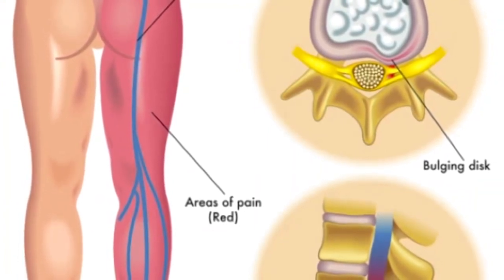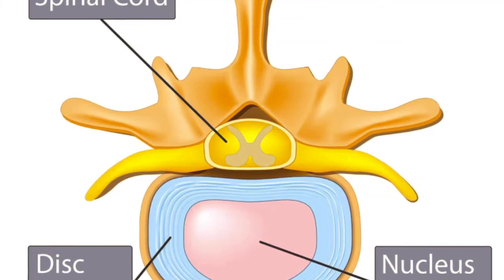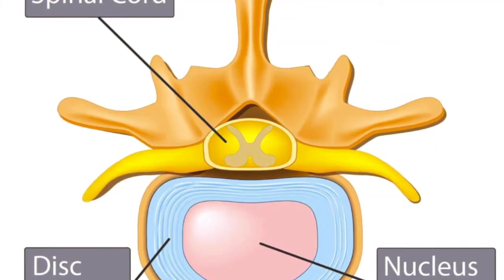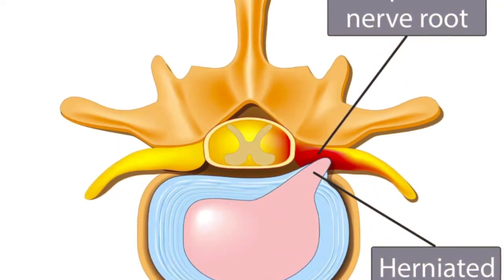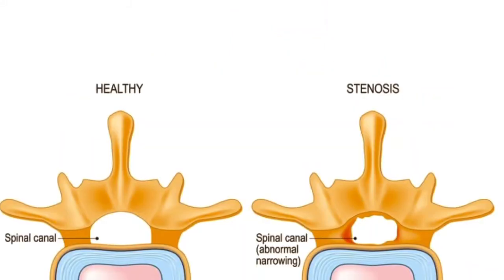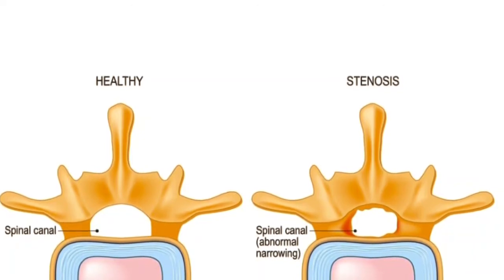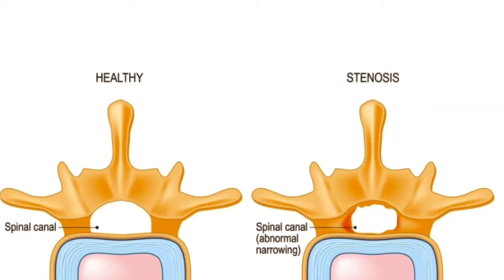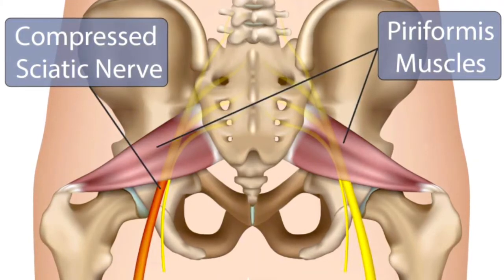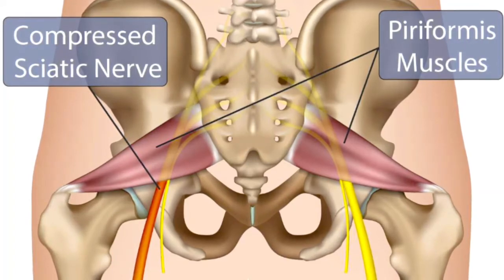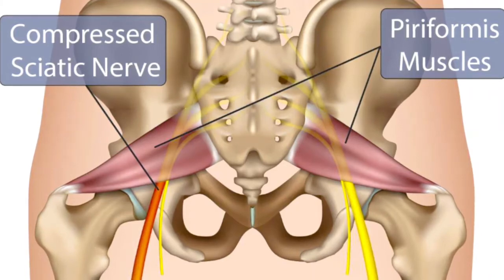Now let's talk about the causes of sciatic pain. One cause is a disc bulge — when the disc is damaged, it can press on the nerve. In addition to that, there is canal stenosis, where the vertebrae become narrow or tight and press on your nerves. The third cause is your buttock muscles, or piriformis muscles in medical language. If these muscles press on your nerve, then you have sciatic pain with burning or numbness.